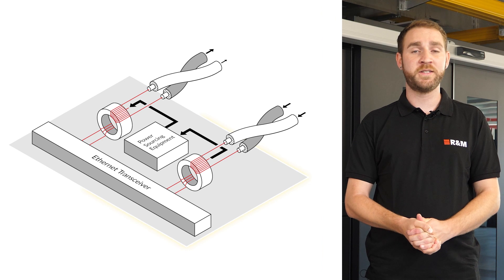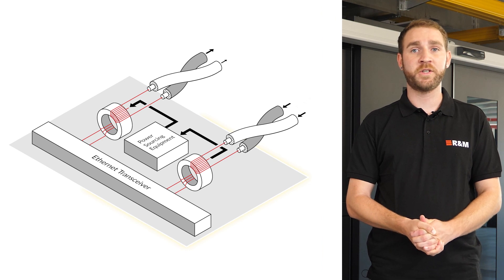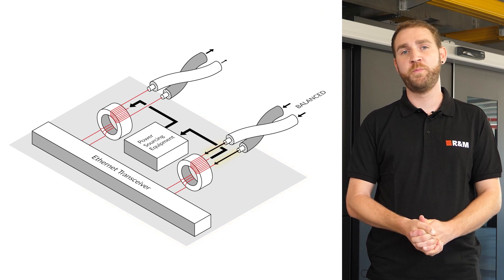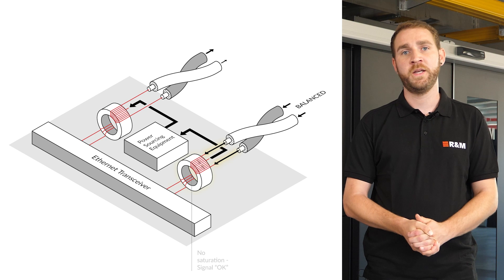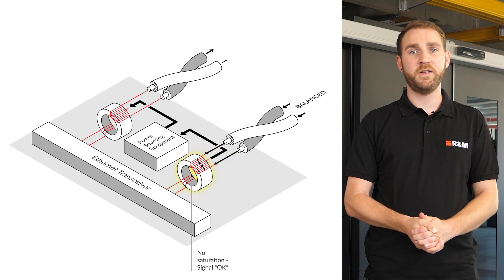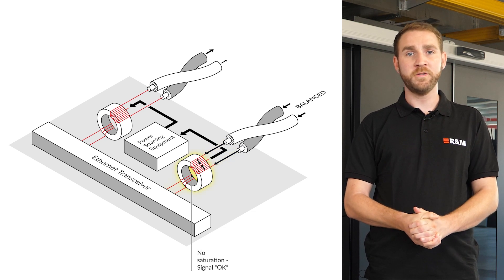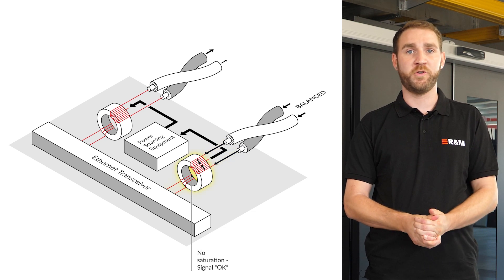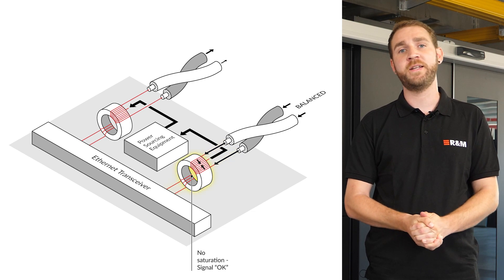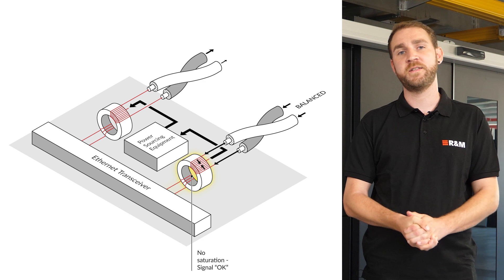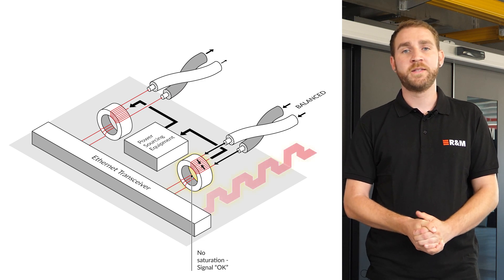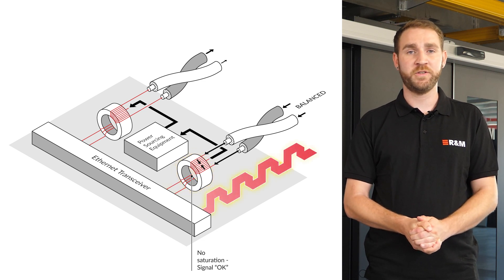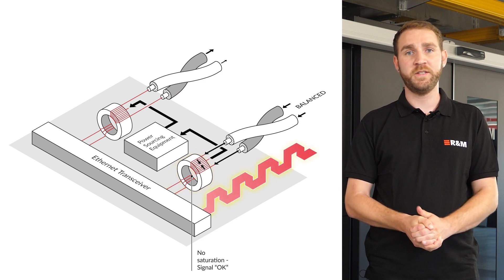In a symmetrical system, the currents on both conductors of a pair are equal. They cancel each other out in the transformer and no magnetic flux is generated. The data transmission is guaranteed.